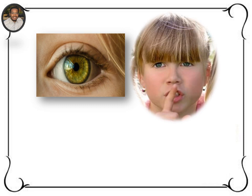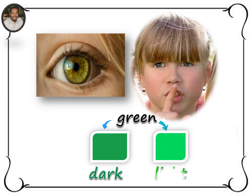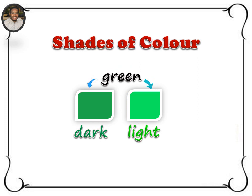But what kind of green are her eyes? Is it this green or this green? Dark green or light green? Dark green and light green. And these are known as shades of color.